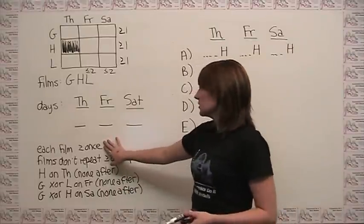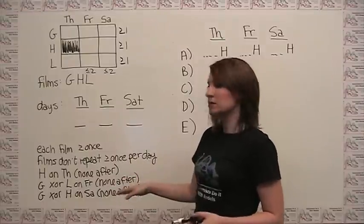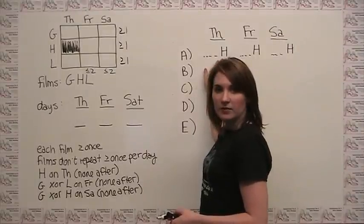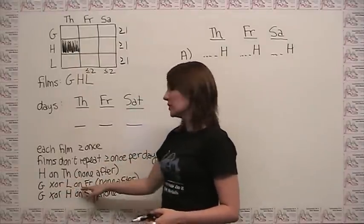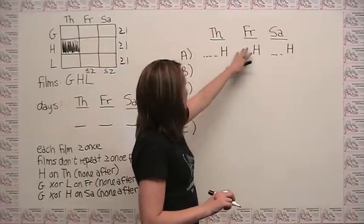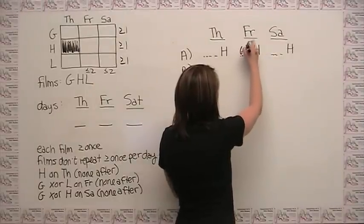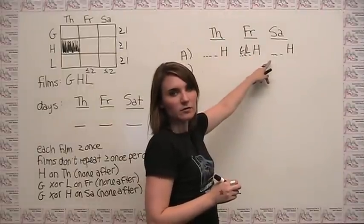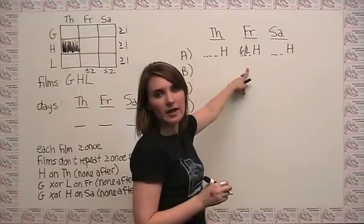Each film is shown at least once — not sure what to do with that yet. Films don't repeat more than once per day — not sure yet. H is on Thursday and nothing is after — that's fine, we've already incorporated that. G or L, but not both, are on Friday and none is after. So either G or L has to go on Friday, but the only place to put G or L given the setup means G or L would come after H, and that breaks the 'none after' part of the rule. So we actually see that this first answer choice is the one that cannot be true.